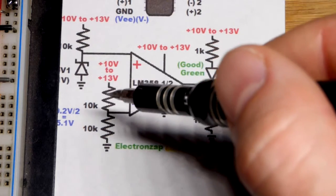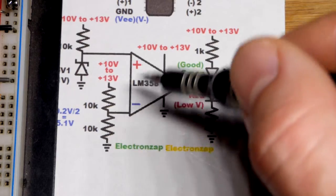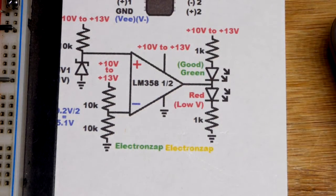When we drop below about 10.2 volts at the supply it will be below 5.1 volts there. So it's lower than that one. So we have a high output there. Red LED lights up.